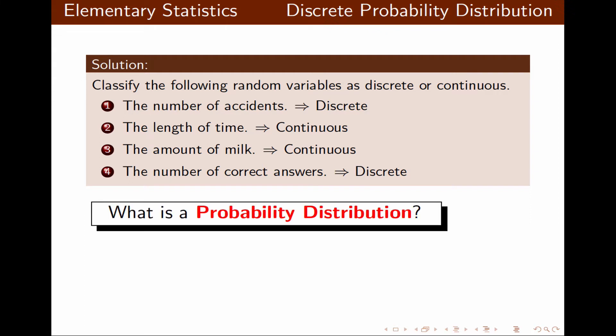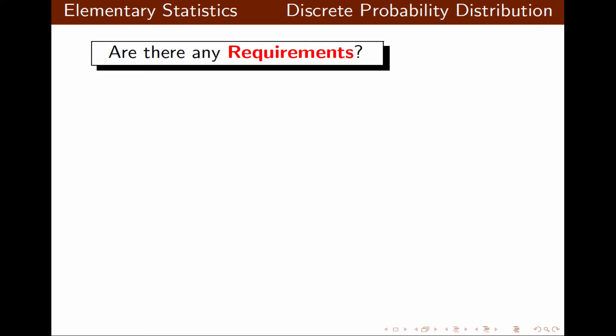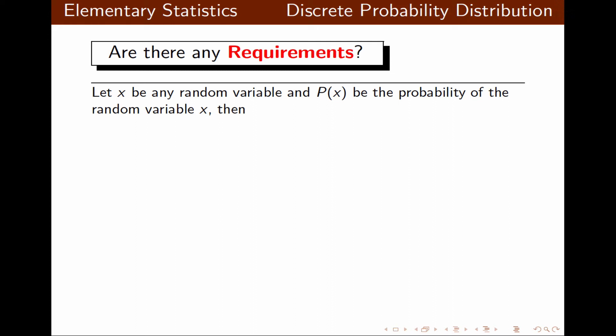What is a probability distribution? It's a description, often given in the form of a graph, formula, or table, that provides the probability for all possible desired outcomes of a random variable. The requirements are: if we let X be any random variable and P of X be the probability of random variable X, then the sum of all probabilities should be 1, and any probability has to be between 0 and 1 inclusive.